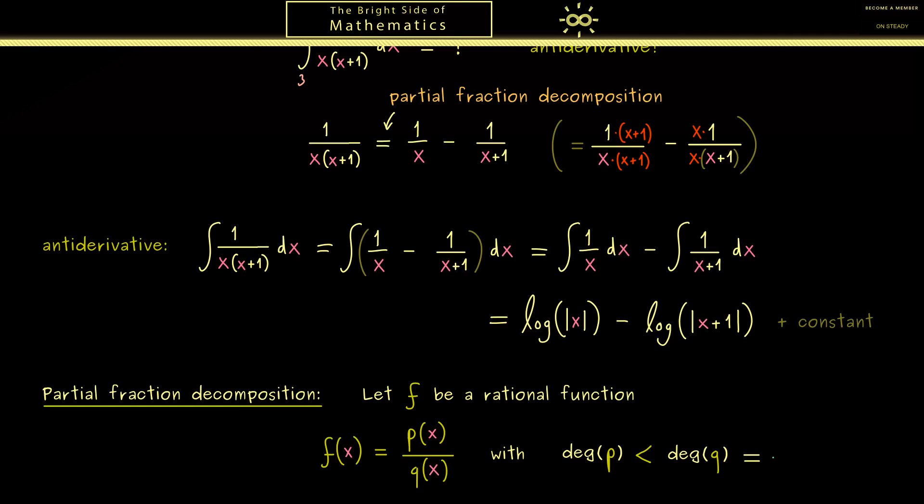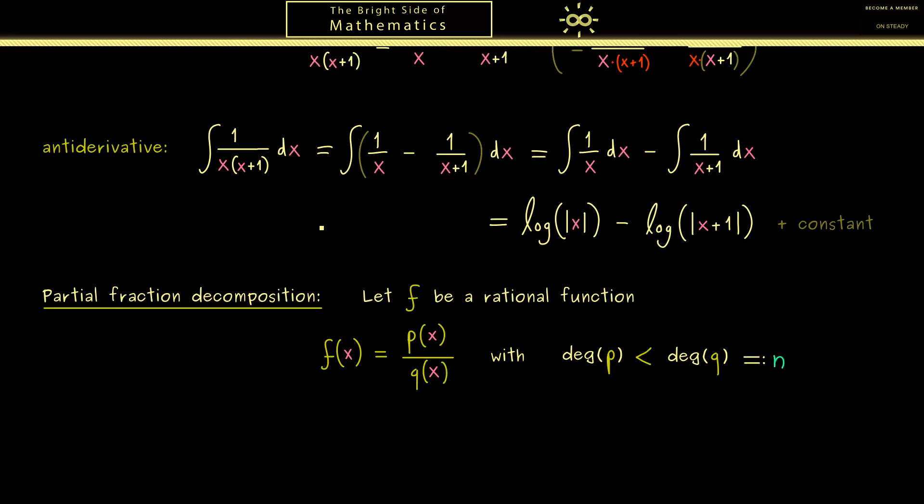So the highest power n we have in the denominator is greater than the highest power we have in the numerator. If this is not the case you can always do a polynomial long division to get this part out. Hence this is indeed the interesting case for our integration.